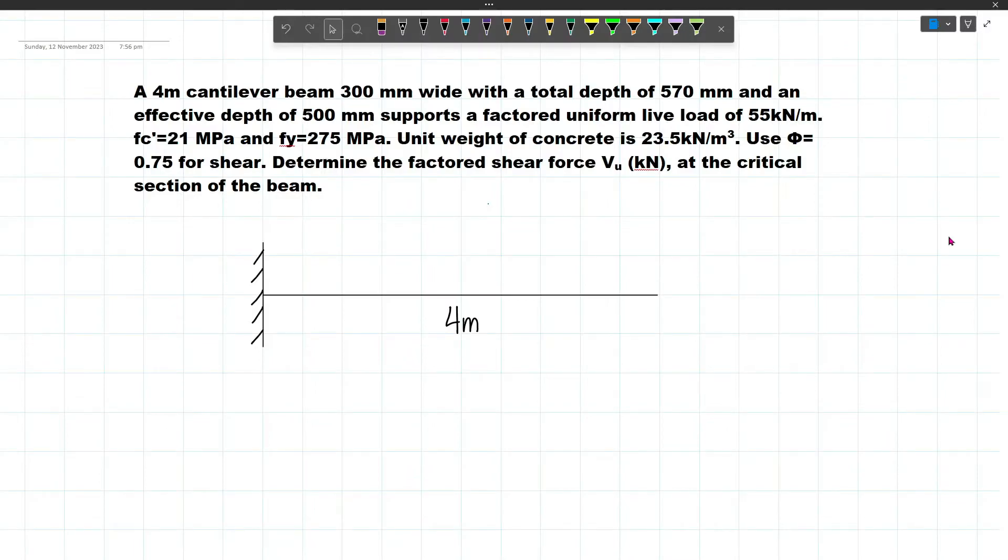In this video, let's solve a problem involving reinforced concrete design. A 4m cantilever beam 300mm wide with a total depth of 570mm and an effective depth of 500mm supports a factored uniform live load of 55kN/m.